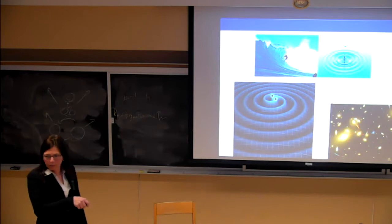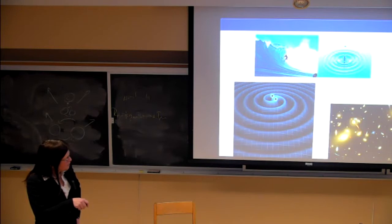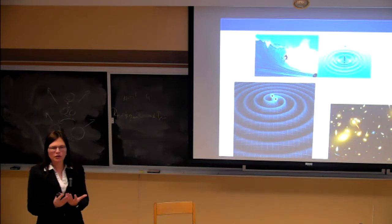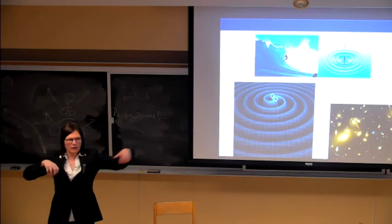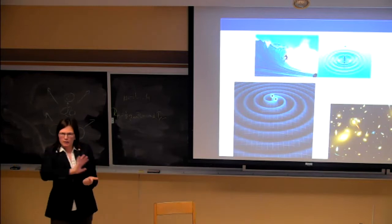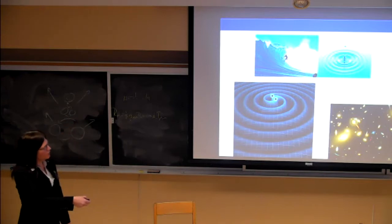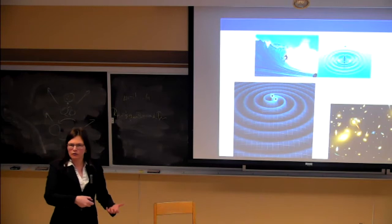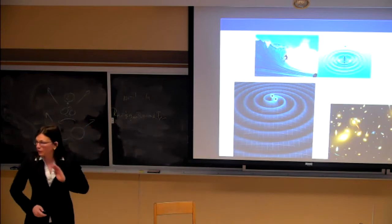That's a Hubble Space Telescope picture. Here there's one galaxy in the center, and the smeared-out objects around it are a lensing effect — pictures of another galaxy whose light is bent by the object in the middle. This is one of the beautiful ways that with the Hubble Space Telescope you can really see the curvature of space-time in the universe.